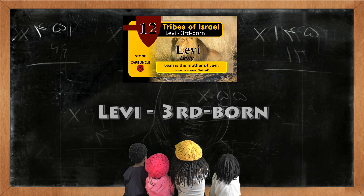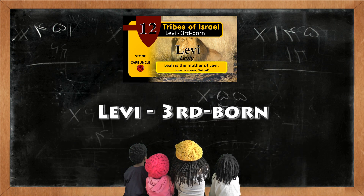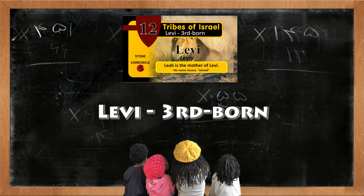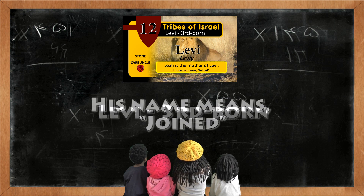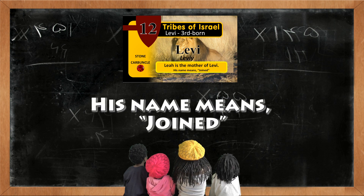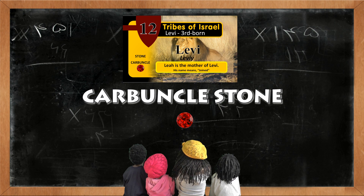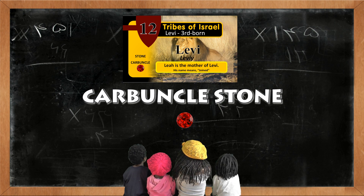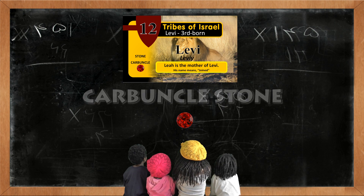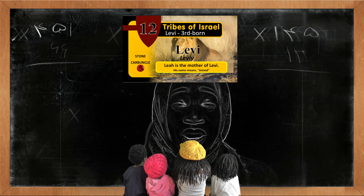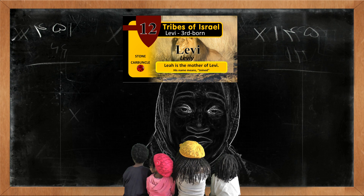Levi is the thirdborn son. His name means Joined. The carbuncle stone represents Levi's tribe. Leah is the mother of Levi.